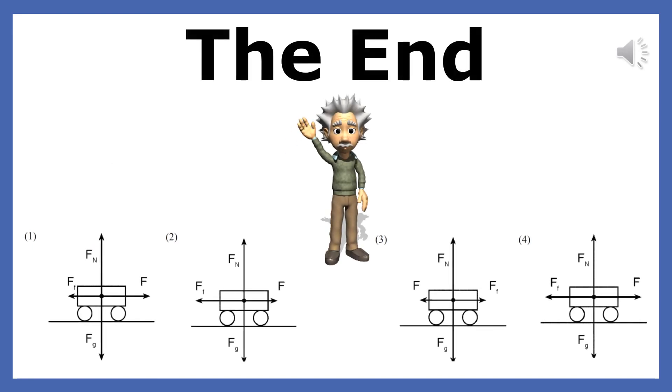In this presentation, you learned that when an object is moving with constant velocity, the net force on the body equals zero, and that the applied force equals the friction force. You also learned that the friction on a sliding body always points in the direction opposite to the object's motion. This is the end of part two of Free Body Diagrams.